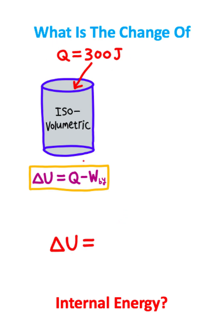To solve this problem, I'll use the first law of thermodynamics, which says that our change of internal energy is equal to the heat absorbed by the system, which is 300 joules, minus the work done by the system.